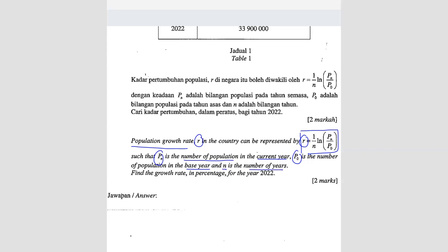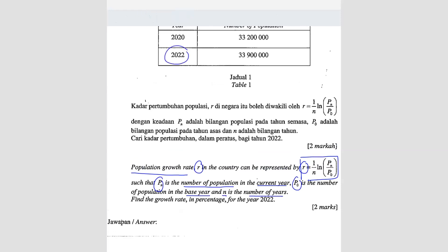Find the growth rate in percentage for the year 2022. We use 2020 as the base year P_0. So the growth rate formula has n = 2 years (from 2020 to 2022), and P_n is the population of 2022, which is 339,000,000.